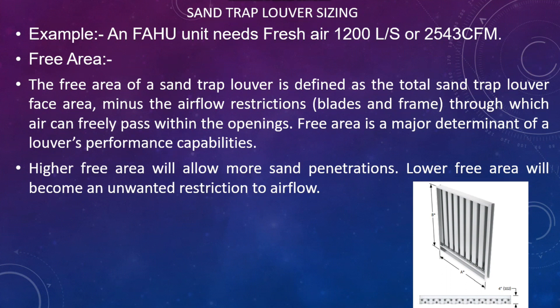For example, an FHU or fresh air handling unit needs fresh air at 120 liters per second, or 2543 CFM. There is a separate fresh air handling unit, and near to that there is an FHU duct, and at the end of that fresh air duct there is a sand trap louver which allows fresh air to enter into the FHU unit.